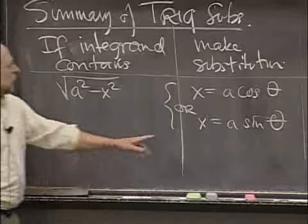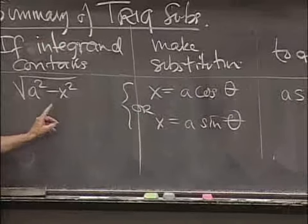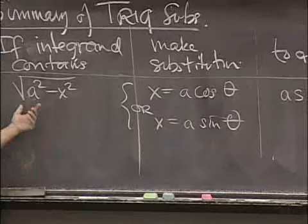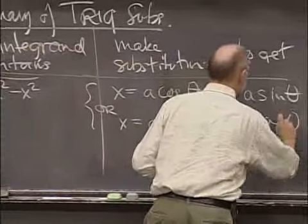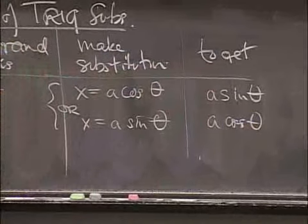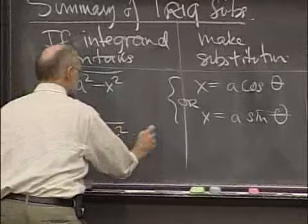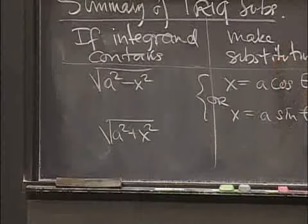If you made the substitution a sine theta, you'd get a squared minus a squared sine squared, which is a times cosine theta. And then you can go ahead as well. We just saw another example, namely if you have a squared plus x squared, that's like the example we had up here. a is equal to 1 in this example.